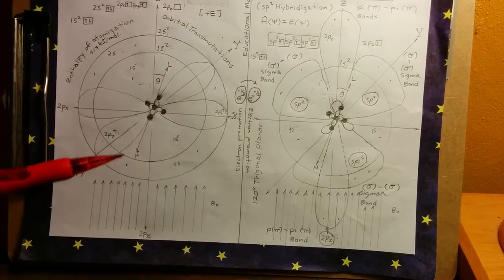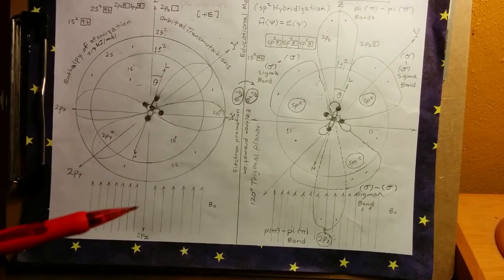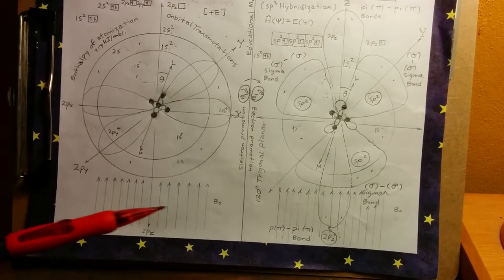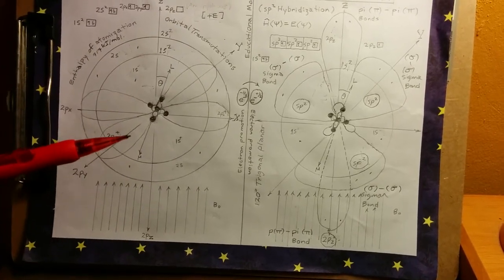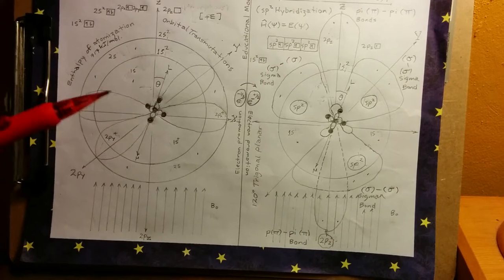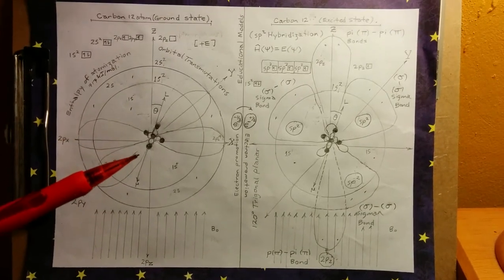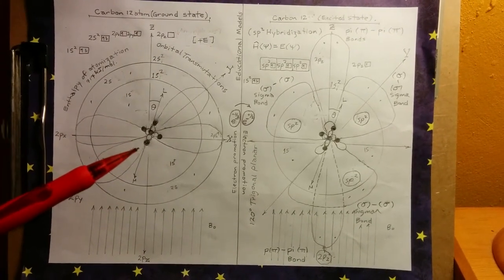So what it does is it aligns and orders itself in this external magnetic field, B0. And so we can now position them, order them, and align them in a way that they can